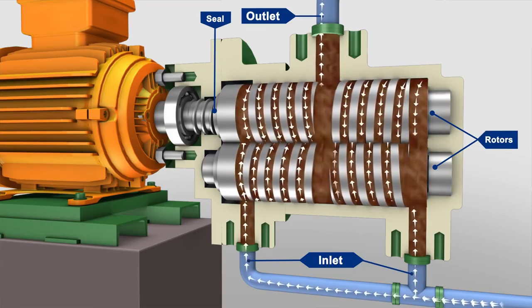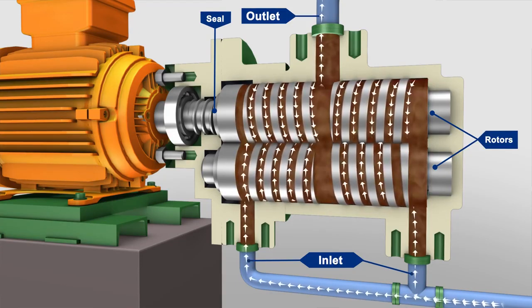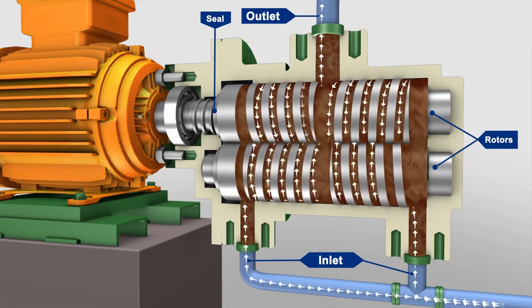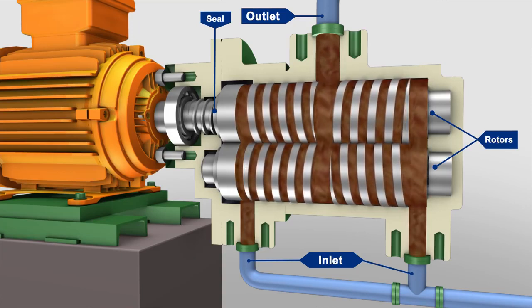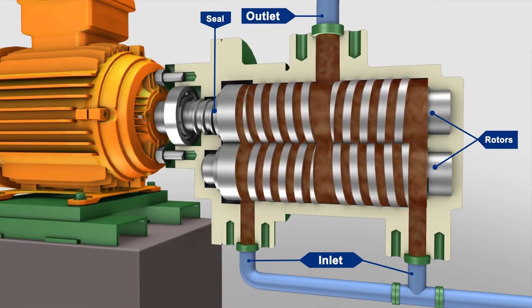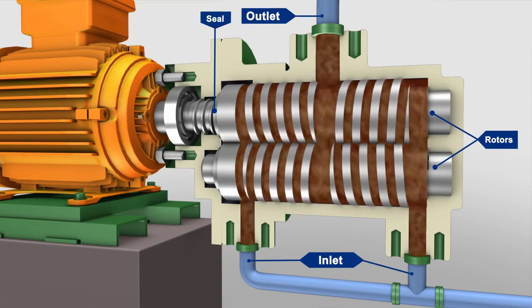The successive sets of seals form fully enclosed cavities that move continuously from inlet to outlet. These cavities trap liquid at the inlet and carry it along to the outlet, providing a smooth flow.